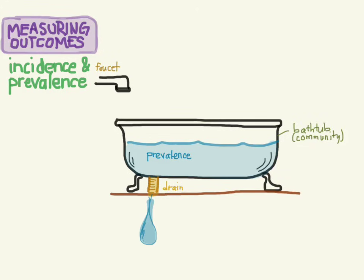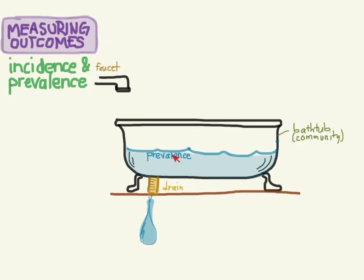We can get rid of water from the tub by draining it, and that's going to lower the level in the tub. So now we have less prevalence because we've gotten rid of some of this water. How do you get rid of water from the tub? There are really two ways to get rid of people who have the disease: they can either be cured or they can die.